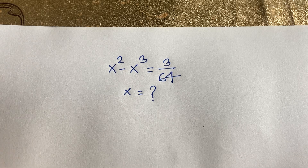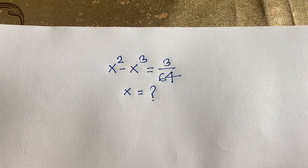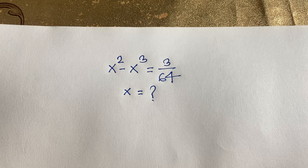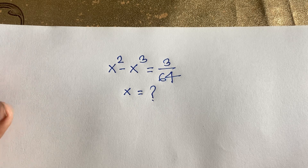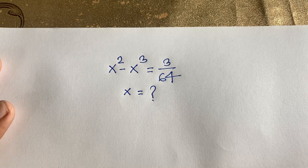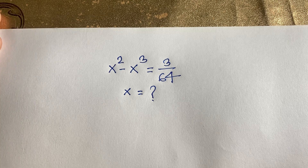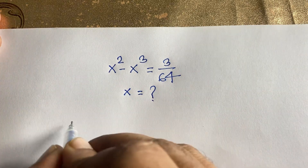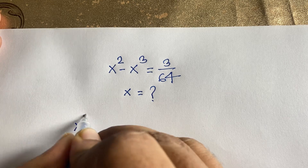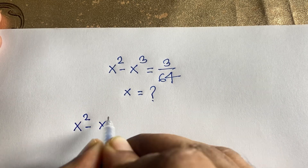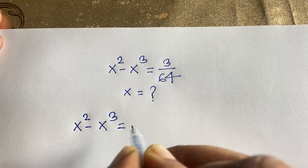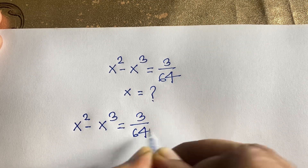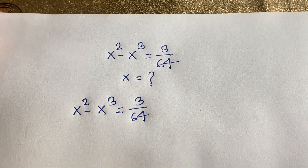Hello everyone. In this video we'll solve this interesting math question: x squared minus x cubed is equal to 3 over 64. We need to find x. Let's start. Our question is x squared minus x cubed is equal to 3 over 64, and we'll find out the value of x in this exponential equation.